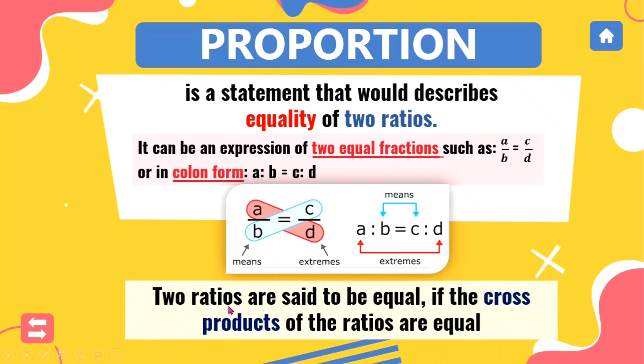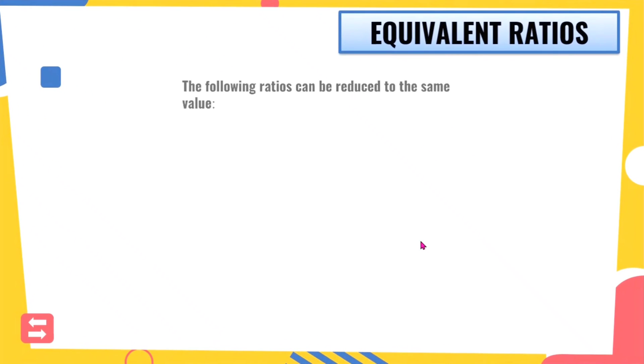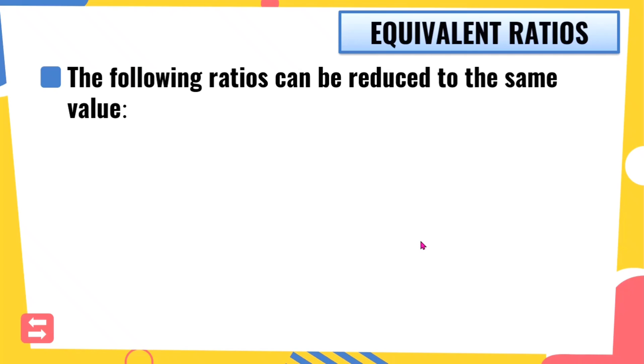Two ratios are said to be equal if the cross products of the ratios are equal. So kapag nag-cross multiply tayo, tapos equal yung lumabas, ibig sabihin nun, proportion. Or, kapag sa colon form, pag-equal yung product ng extremes sa product ng means, that is also called as proportion. So let's have more examples related to this.